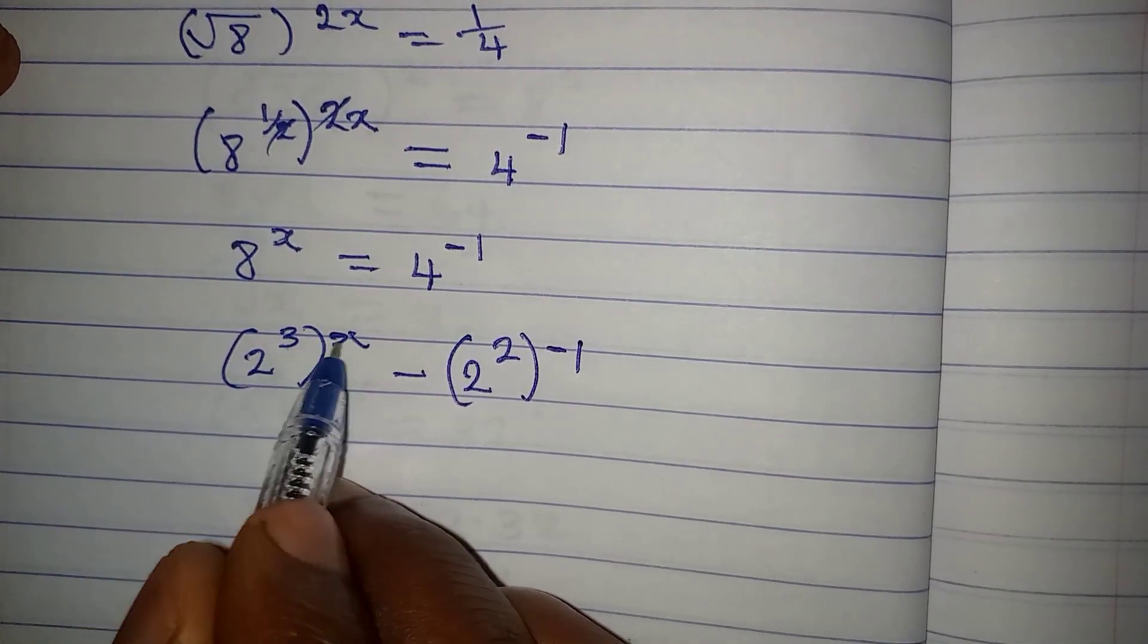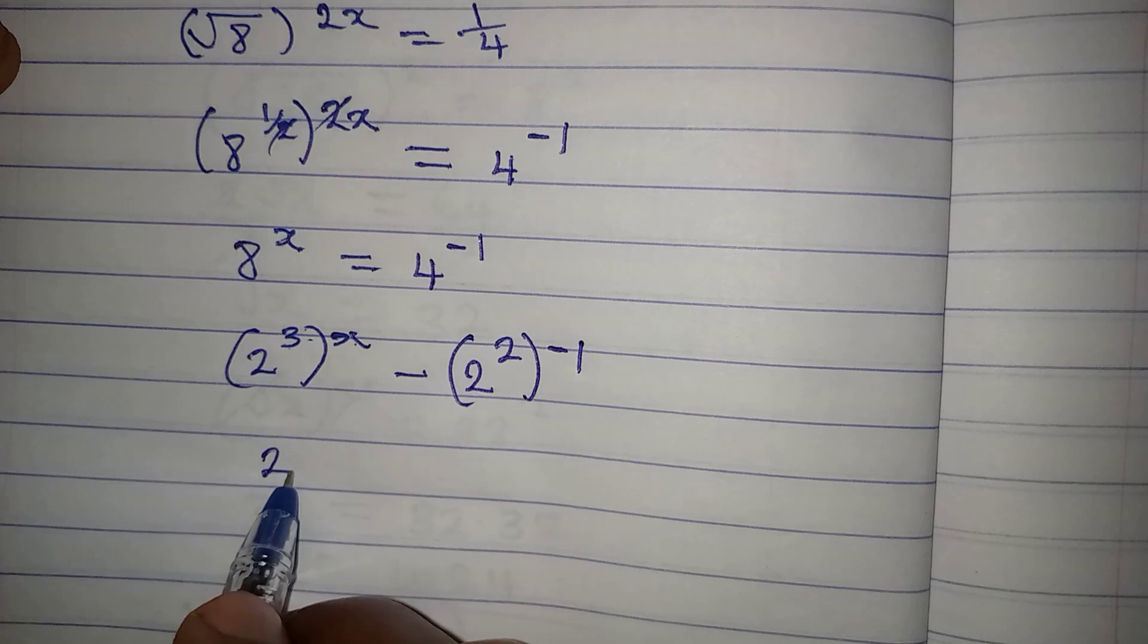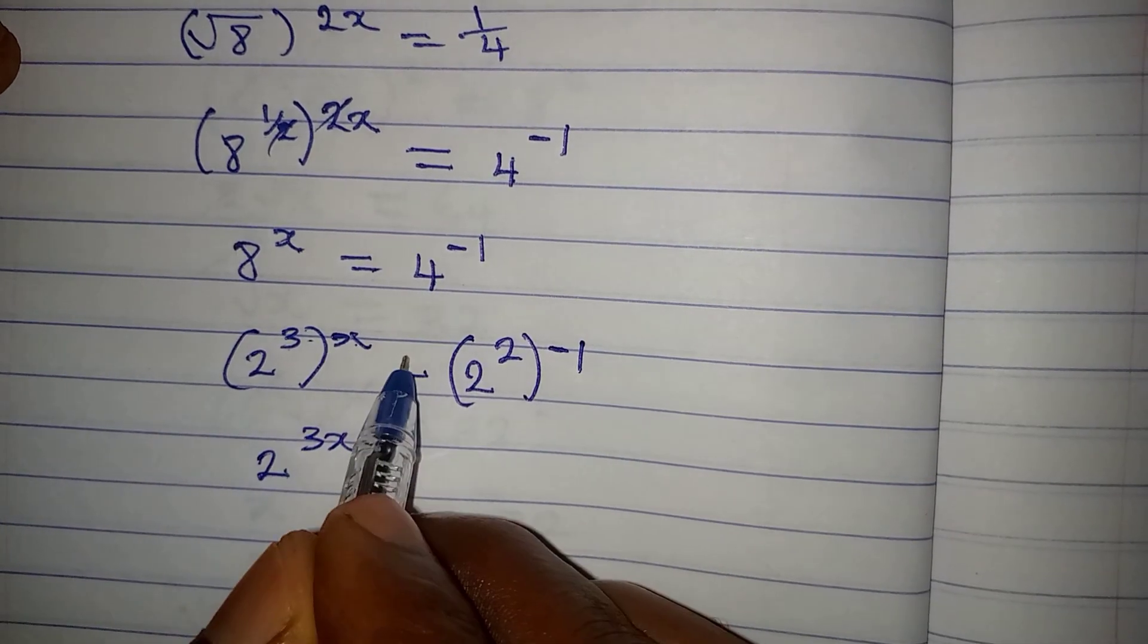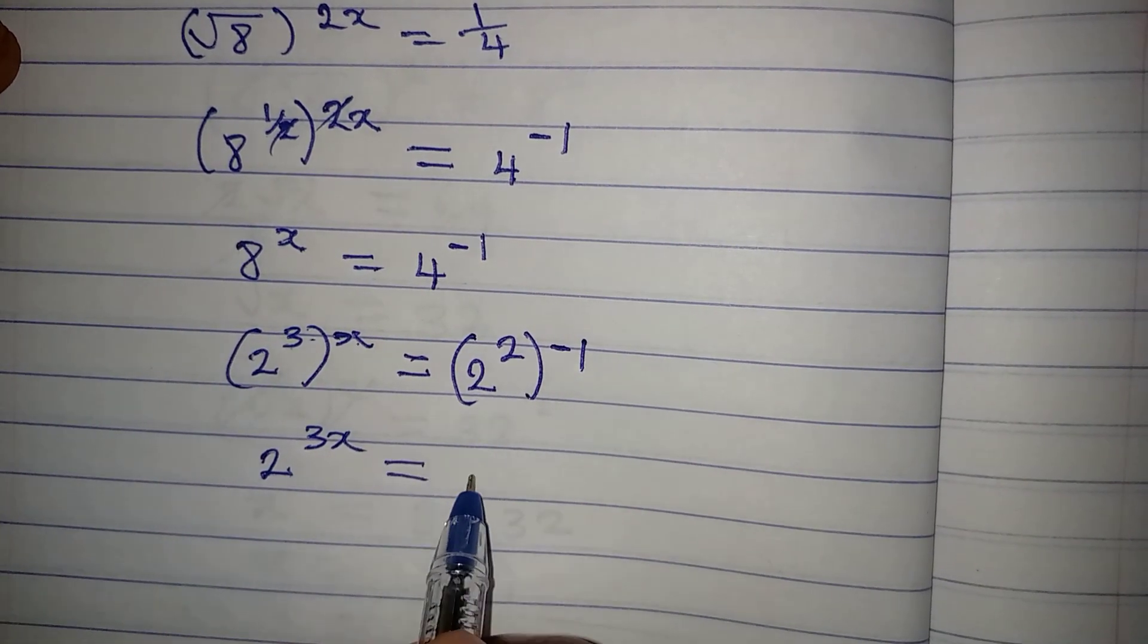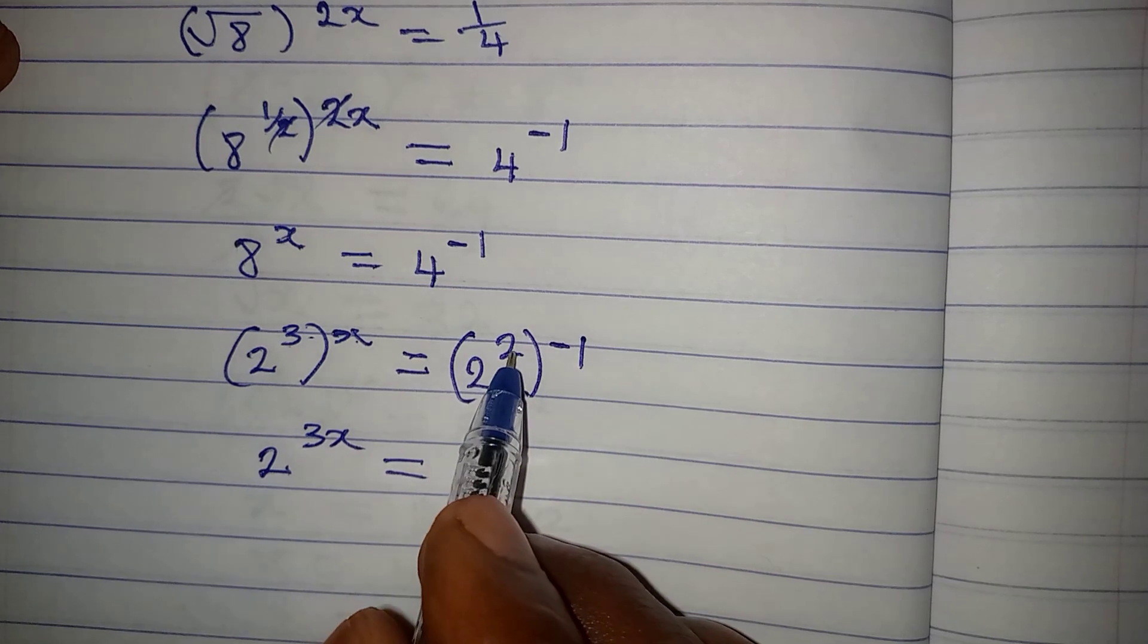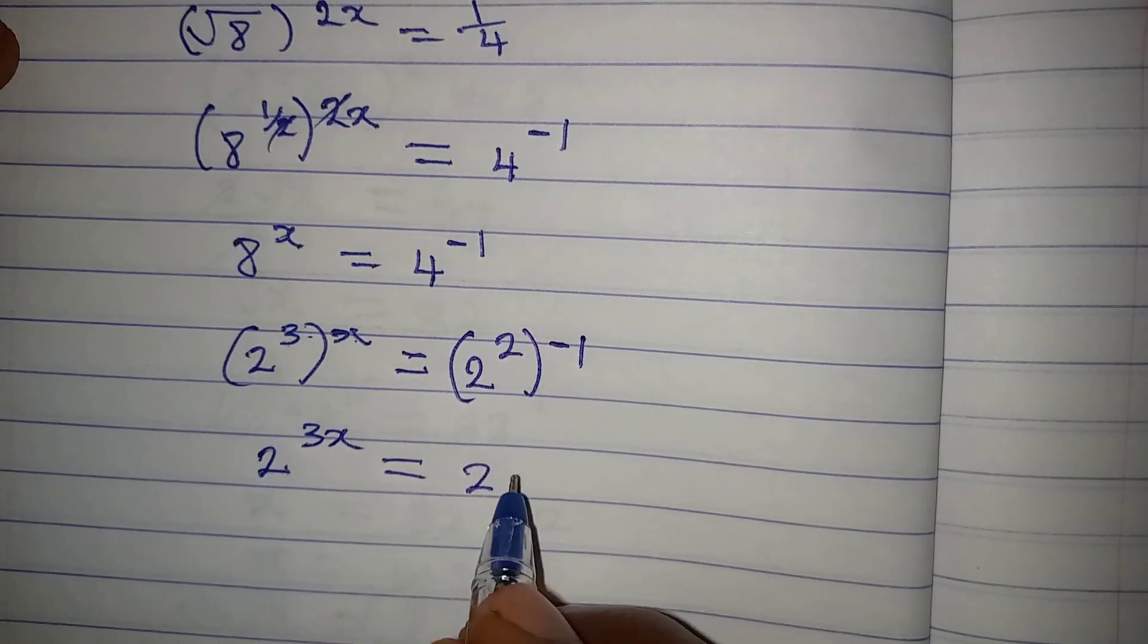Now, the powers can always multiply, so we have 2 to the power of 3x, this is equal to 2 to the power of 2 times minus 1 is minus 2.